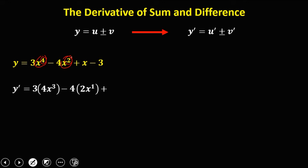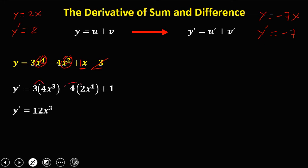Plus the derivative of x: since x has a coefficient of 1, the derivative of x is 1. For reference, the derivative of 2x is 2, and the derivative of negative 7x is negative 7. Since the derivative of a constant is 0, the derivative of negative 3 is 0. Simplifying, we get 12x to the power 3 minus 8x plus 1.